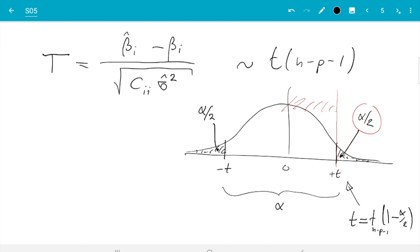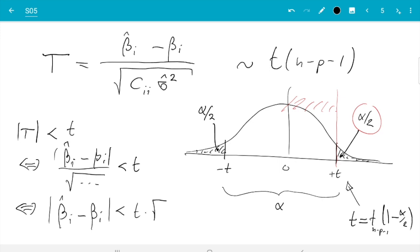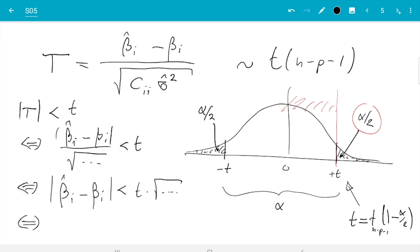And then it's just rewriting. Then we do t is less than this critical value, if and only if beta hat i minus beta i divided by square root is less than t. If and only if beta hat i minus beta i is less than t times the square root. And we need to now be a bit careful.